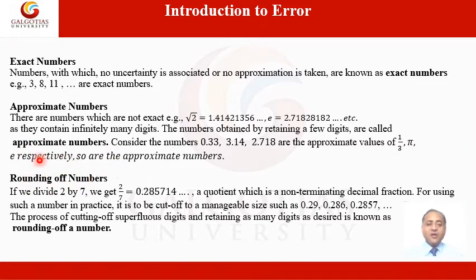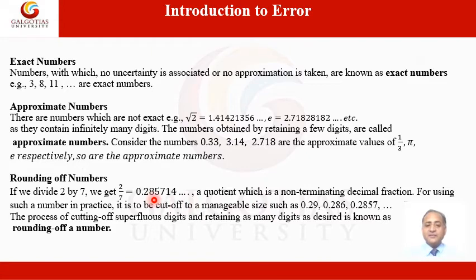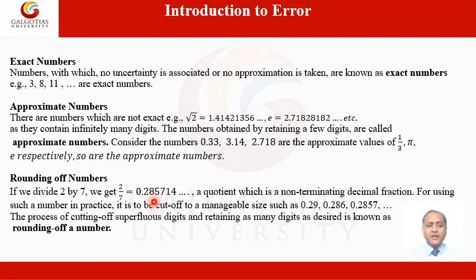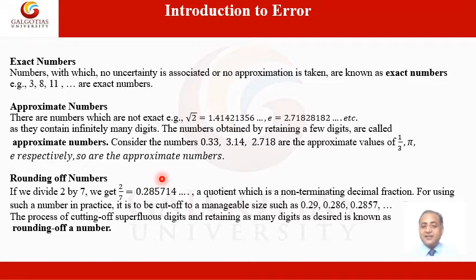Next is rounding of numbers. If we divide 2 by 7, we get a non-terminating decimal fraction. For practical use, it must be cut to a manageable size such as 0.285 or 0.29. The process of cutting off superfluous digits and retaining as many digits as desired is known as rounding off a number.